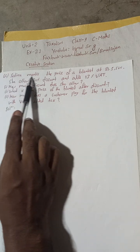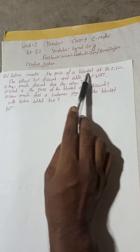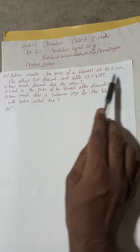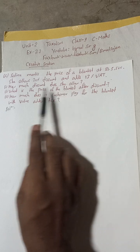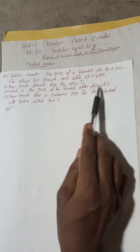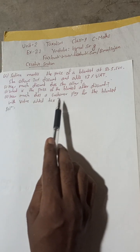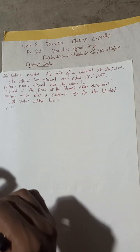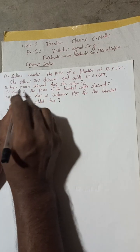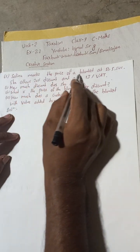Question 6c: Selena marks the price of a blanket at Rs 5500. She allows 20% discount and adds 13% VAT. How much discount does she allow? What is the price of the blanket after discount? How much does a customer pay for the blanket with value added tax? Let's begin this solution. Selena marks the price of a blanket at Rs 5500.